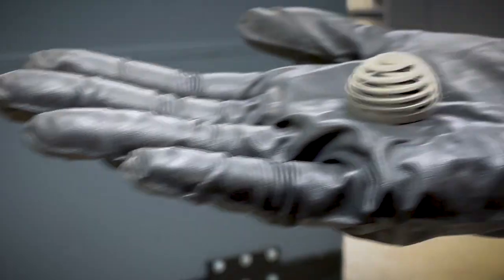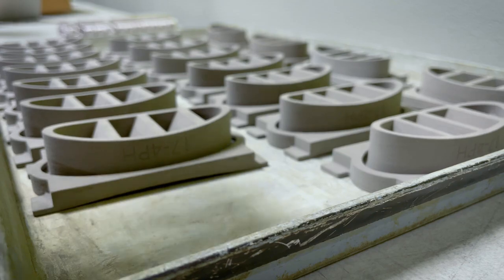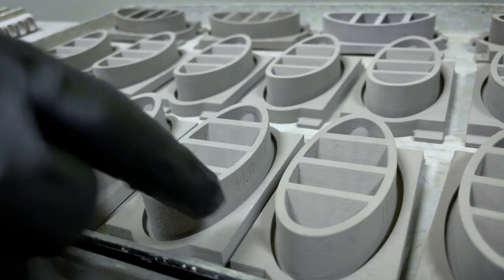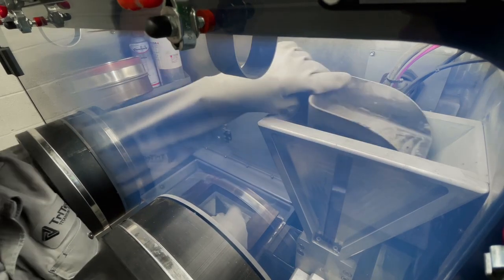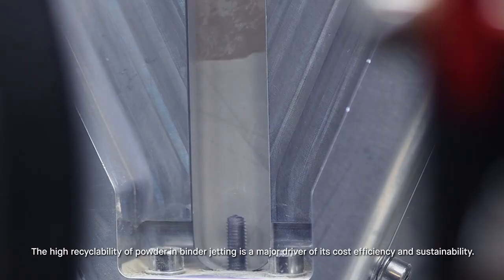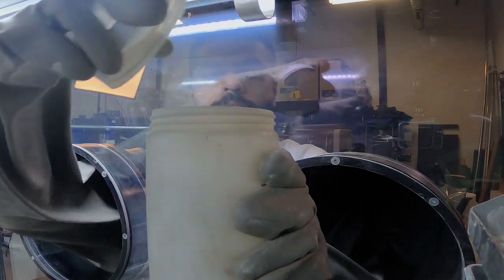After drying, the parts are strong enough to handle during the depowdering process. The depowdering process removes the parts from the powder bed and recovers all of the loose unused powder that was not printed on. This powder gets reused in future builds.